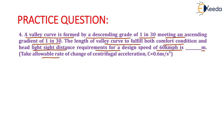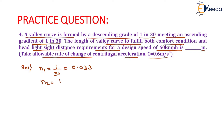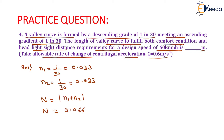Take the allowable rate of change of centrifugal acceleration, that is c equals 0.6 meter per second cube. Now we have to find the length of valley curve, for which we first need to calculate the value of capital N. So N1 equals 1 by 30, which gives 0.033. Similarly N2 equals 1 by 30, which equals 0.033. Capital N equals N1 plus N2, which gives 0.066.